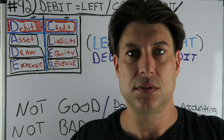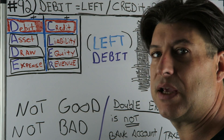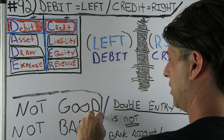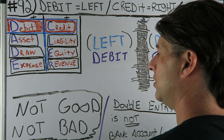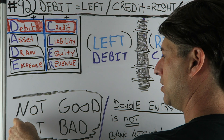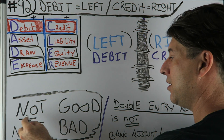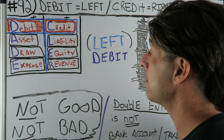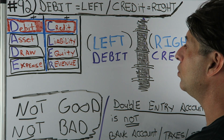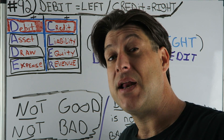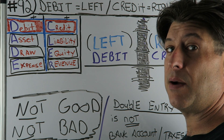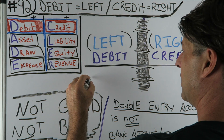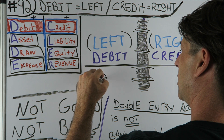Another huge thing — and we're going to harp on this — they're not good, they're not bad. A debit: not good, not bad. A credit: not good, not bad. This is so freaking important. Let's do a journal entry here. Let's say we got cash — money coming in the bank. Cash of $500. Now this will mess you up, so follow closely.